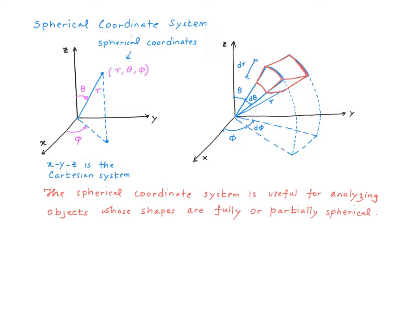A differential element with respect to this coordinate system would look something like this. Just like in the case of the cylindrical coordinate system, you see some planar surfaces and curved surfaces as boundaries of this differential element. So where would this system be useful? Well, this system is useful anytime you have an object with some sort of spherical symmetry, either fully or partially spherical. For example, a pressurized spherical tank would be most conveniently analyzed using a spherical coordinate system.